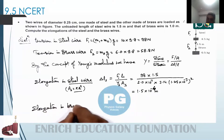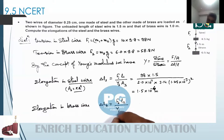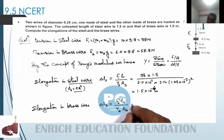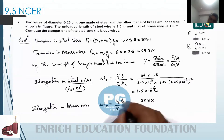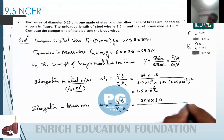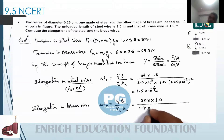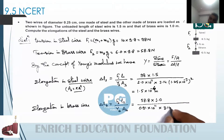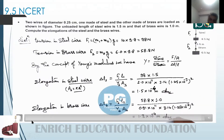Similarly, the elongation in the brass wire: delta L_brass = F₂ L₂ / (Y_brass × A_brass). Substituting: F₂ = 58.8 N, L₂ = 1.0 m, Y_brass = 0.91×10¹¹ N/m², and the cross-sectional area = 3.14 × (1.25×10⁻³)². These are the results of the elongations in the steel and brass wires.